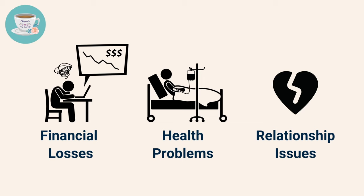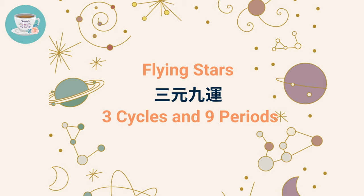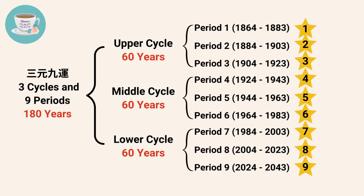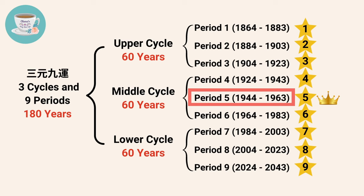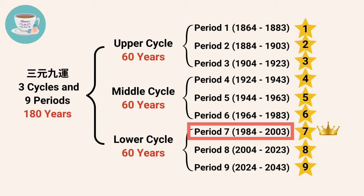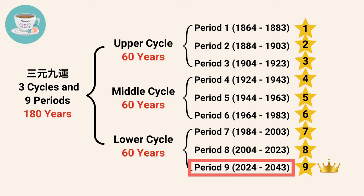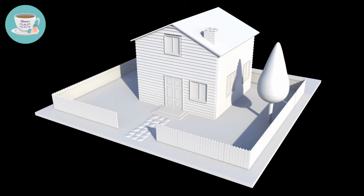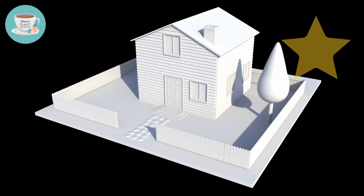Looking at the flying stars theory, this theory in feng shui suggests that each period has an associated auspicious star. For example, in period 4, the number 4 star is the governing star and is considered the most auspicious star during period 4, between 1924 to 1943. However, as time passes, the positive energy associated with the number 4 star gradually declines, ultimately generating negative energy. If you want to fully harness the benefits of auspicious stars, it would be best to consider demolishing your old house and rebuilding a new one that aligns with the current period. If the construction finishes after 2024, then your new house would belong to period 9.